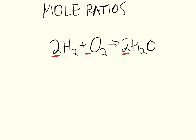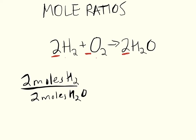We can write a couple mole ratios from this equation. First, we could write for two moles of H2, you'll produce two moles of H2O. That's one example of a mole ratio. Just to show you where these numbers came from, the two moles of H2 came from the coefficient in front of H2. The two moles of H2O came from the two in front of H2O.